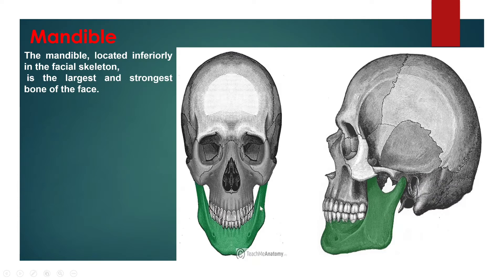The mandible, lower jaw or jaw bone, is the largest, strongest, and lowest bone in the human facial skeleton. It forms the lower jaw and holds the lower teeth in place. The mandible sits beneath the maxilla. It is the only movable bone of the skull, connected to the temporal bone by the temporomandibular joint.